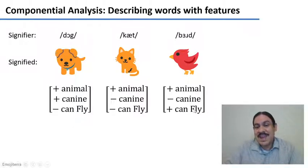And we could use can fly. For example, a bird is plus can fly and a cat would be minus can fly. And the dog obviously would also be minus can fly.